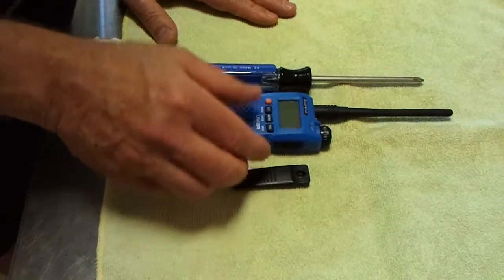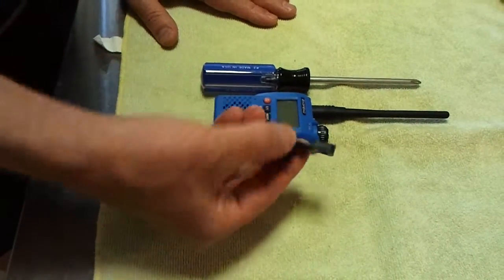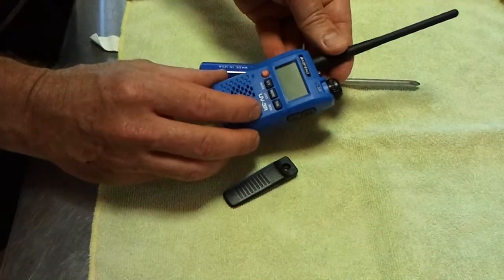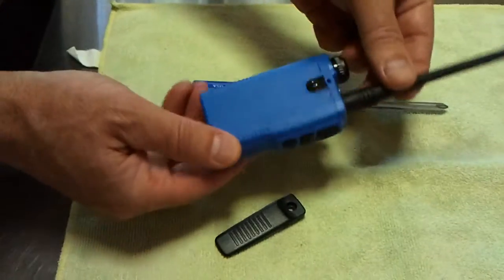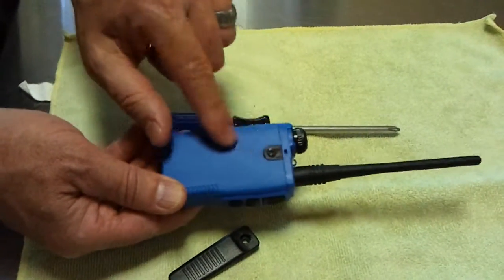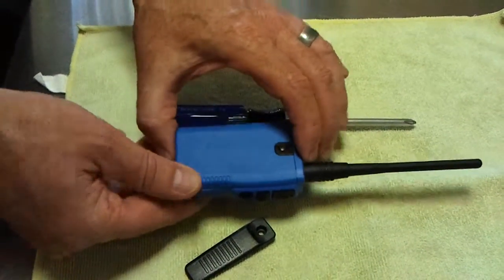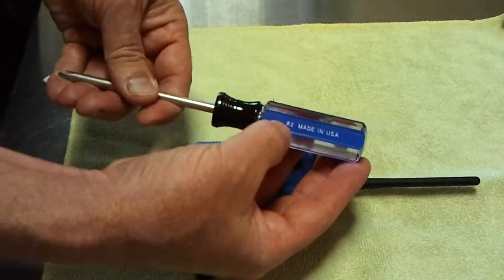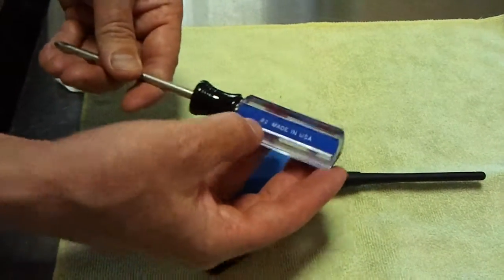Today we're going to show you how to install this belt clip onto your UV-3R radio as it is factory built. It comes with this plain screw attached to the back. You're going to need a number 2 Phillips screwdriver to accomplish this.